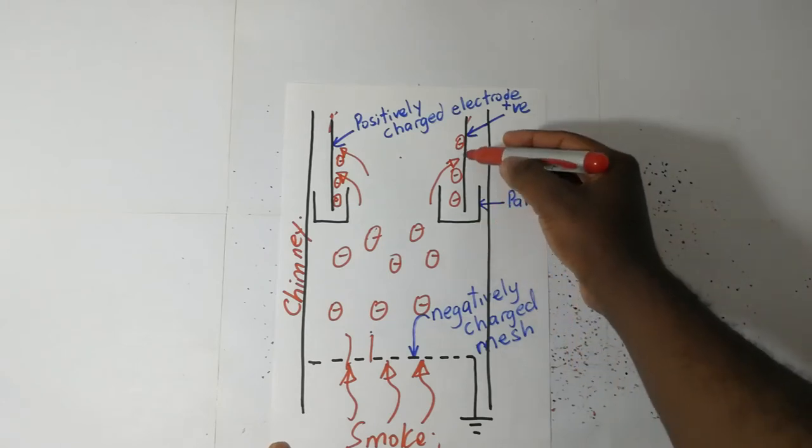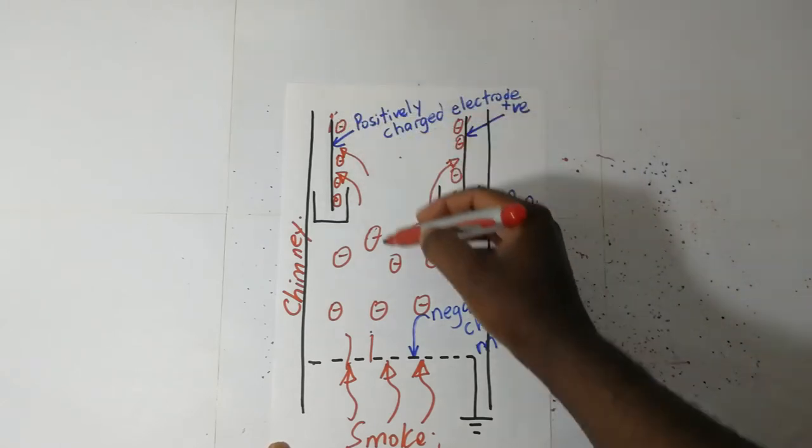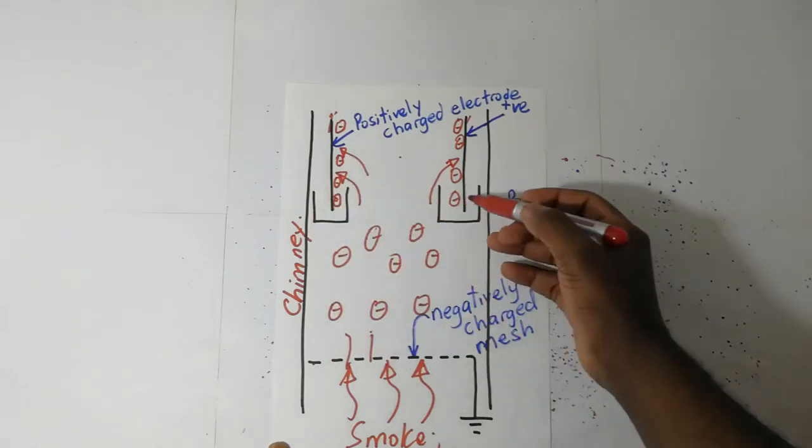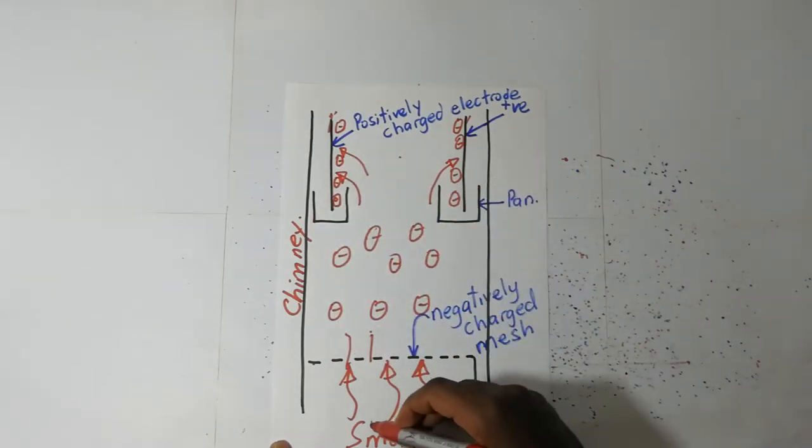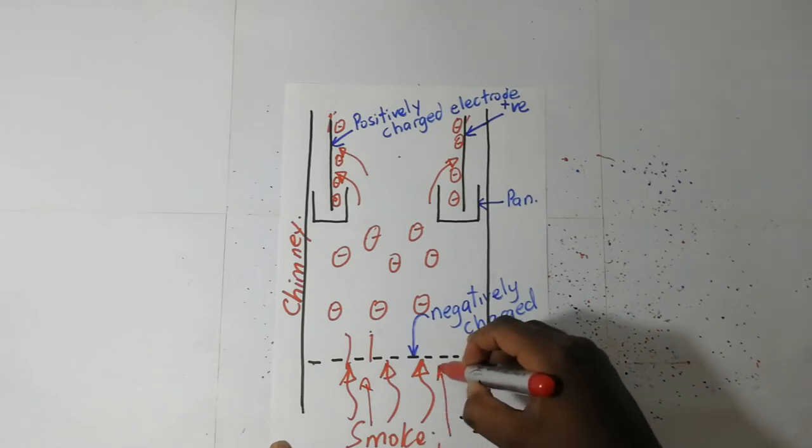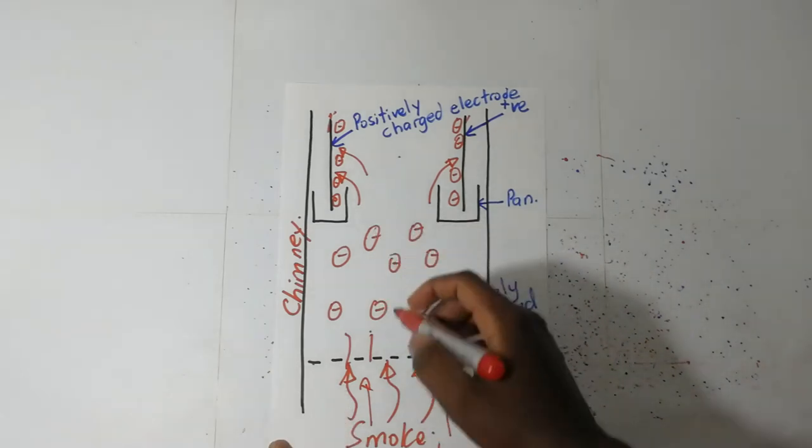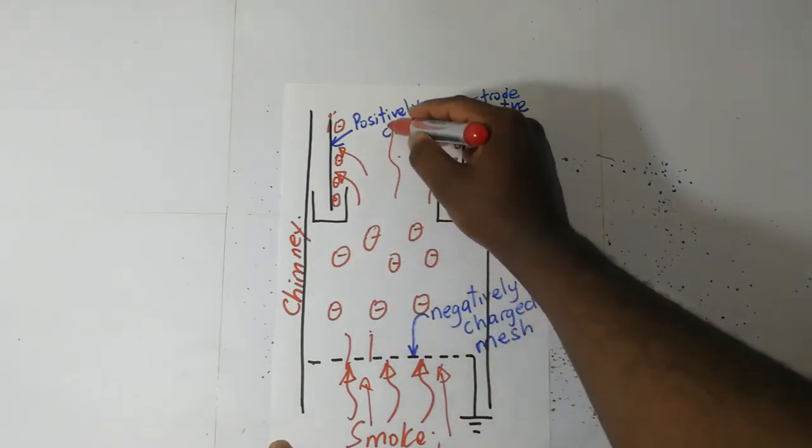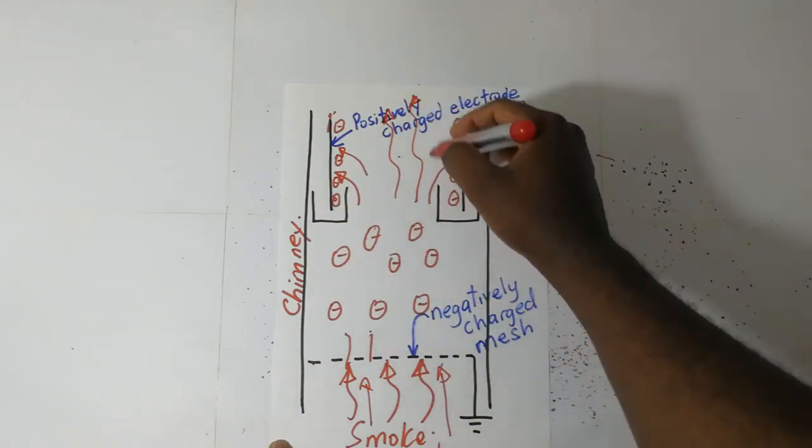They stick to this positive electrode. The negatively charged particles will go and stick to these positive electrodes. As a result, you'll find that this smoke that came in here with all the particles—because these particles have been deflected by this electrode—you'll end up having clean air moving out.